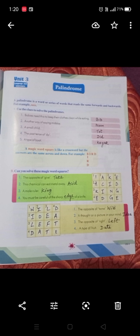This is page number 31. We are going to study palindrome. A palindrome is a word or series of words that reads the same forwards and backwards. For example, S-W-E-S: if you read from the front it is the same as reading from the back. Use the clues to solve the palindrome. Number 1: babies need this to keep their clothes clean while eating — it is 'bib' (B-I-B).